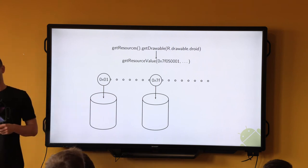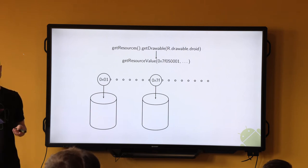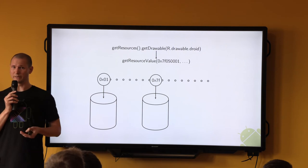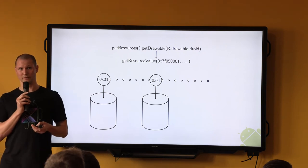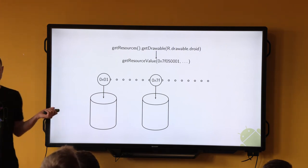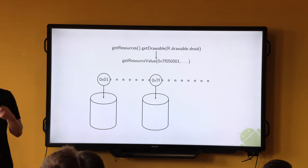The framework comes to a fork in the road at this point, because your application not only loads its own APK, it also loads the framework APK, and potentially some other APKs depending on what libraries you use. So where should the framework code continue to look for the resource you requested? The answer lies in the highest bits of the resource numerical qualifier.